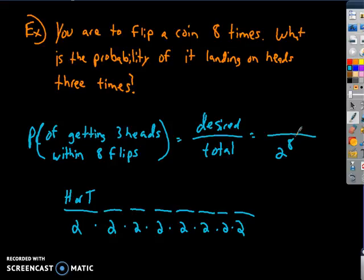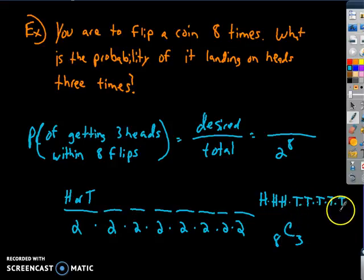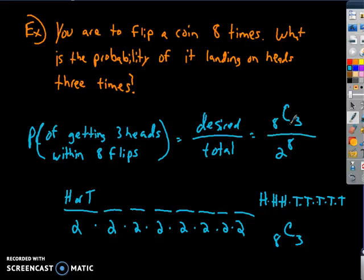My desired outcome is specifically three heads within that mix. It could be heads, heads, heads, and then the rest of them have to be tails. But it doesn't have to come in any particular order — it can come in any order. Thinking back to combinations and permutations, that's like the word HHHTTTTT, and there's a combination of those letters. I have eight letters and I want three of them to be H, so it's a combination of eight choose three. You could also say eight choose five, since five have to be tails — coincidentally both are equal. So I know my numerator is a combination of eight choose three.